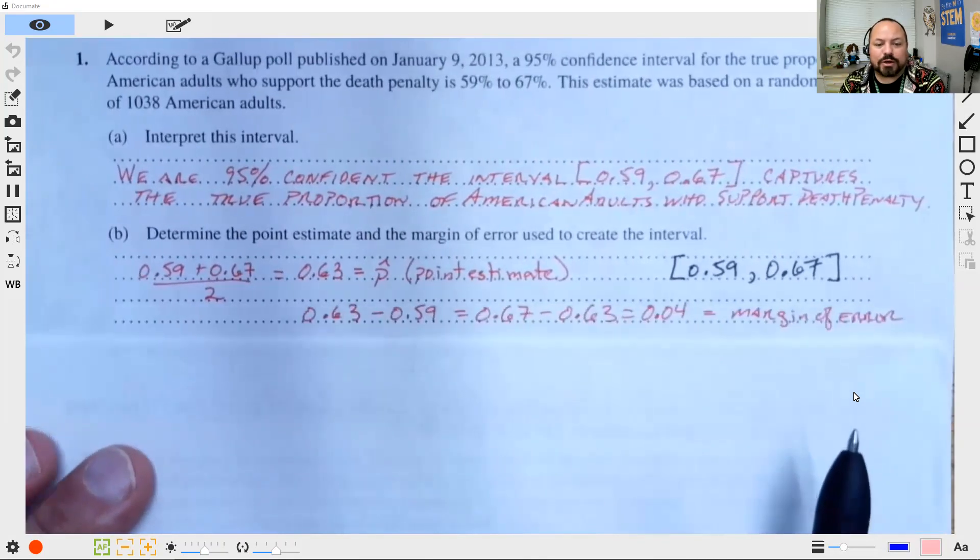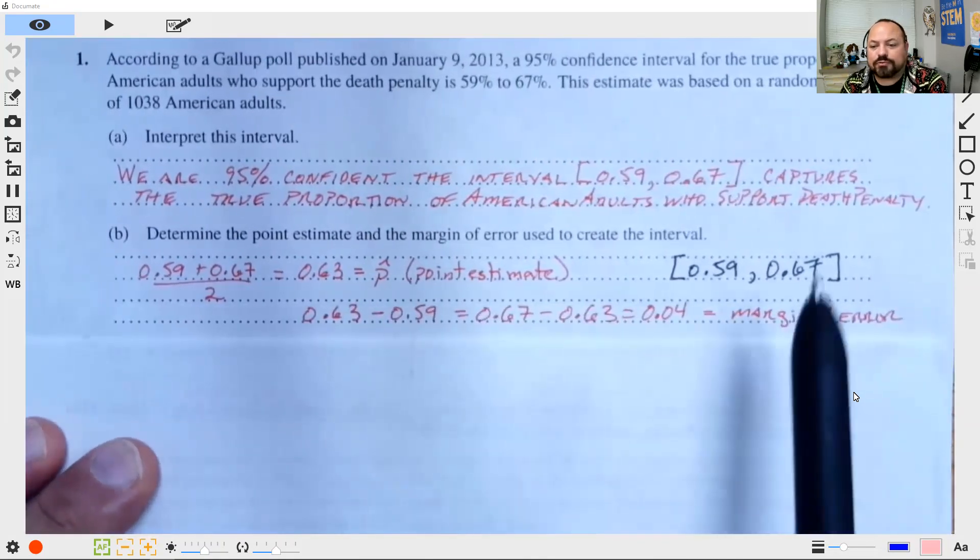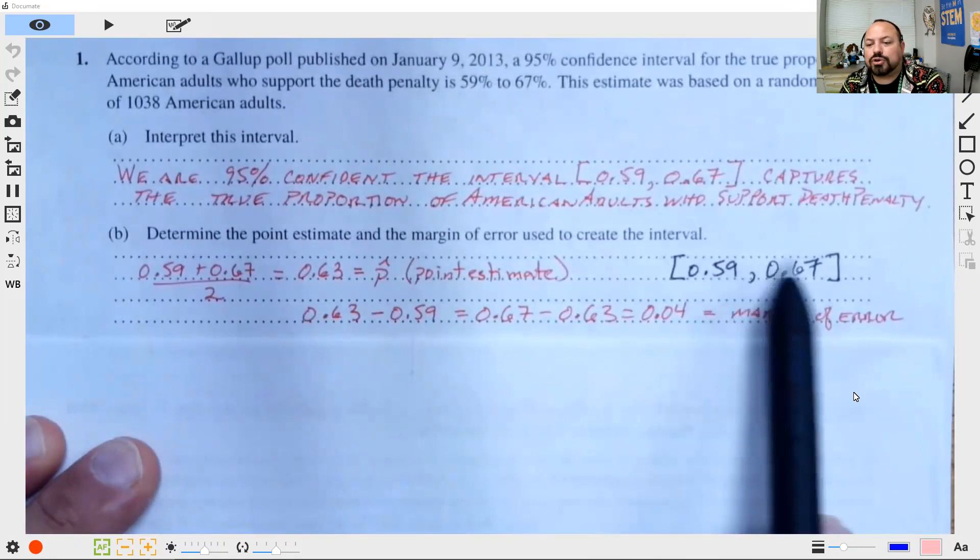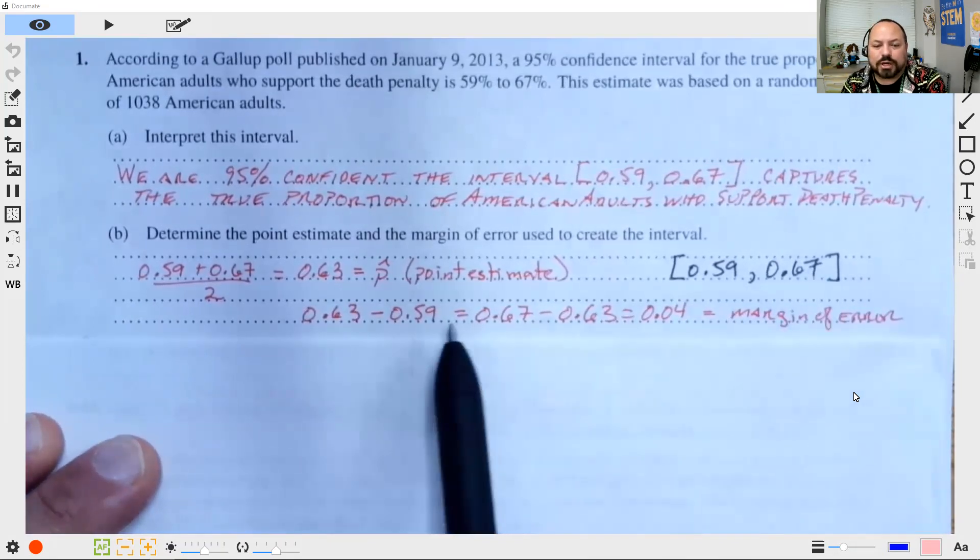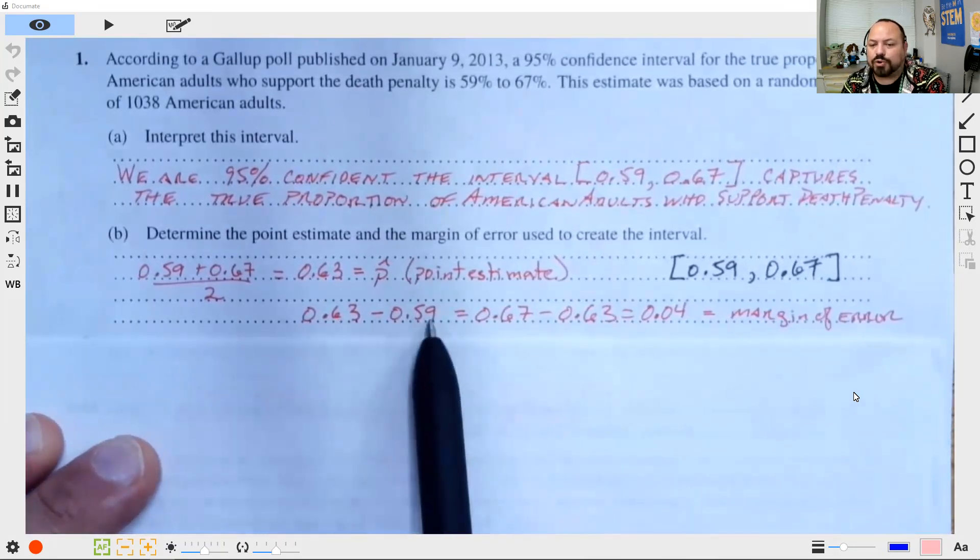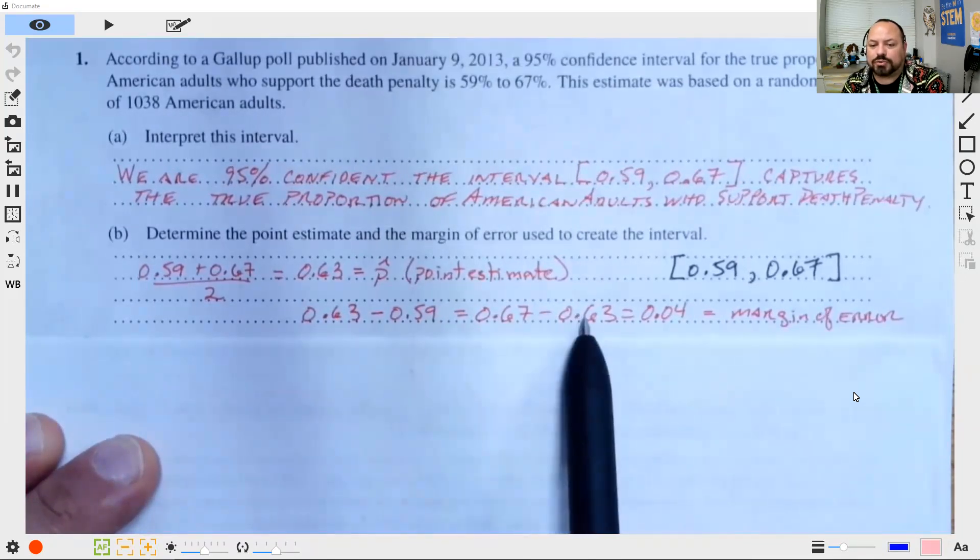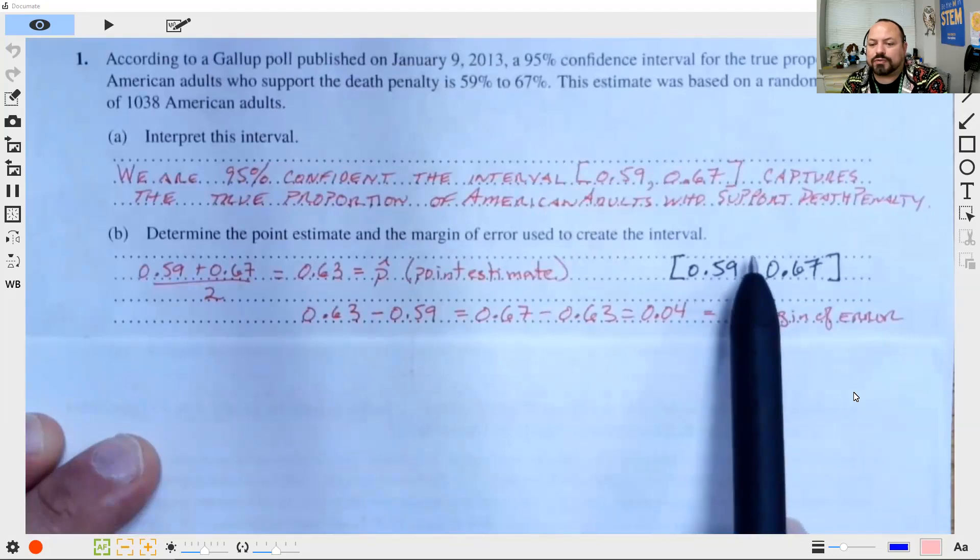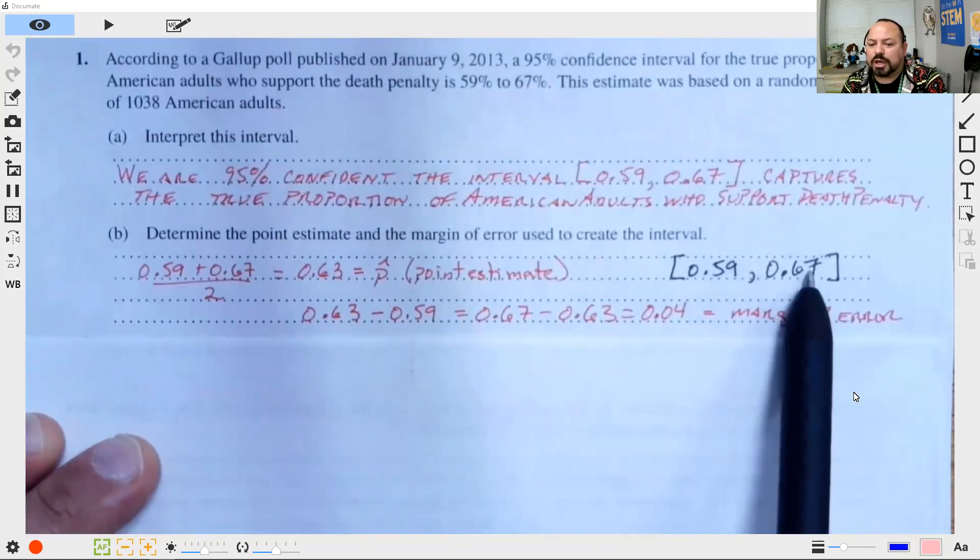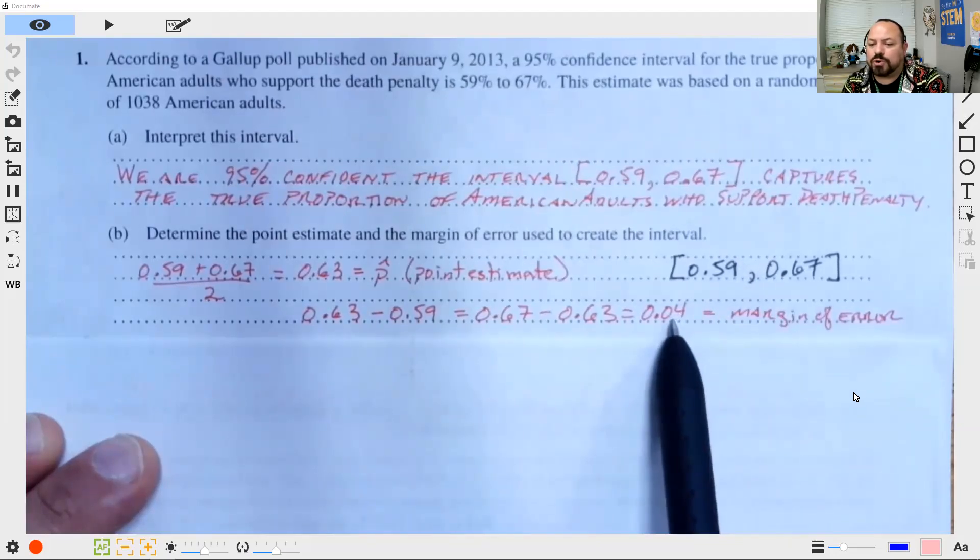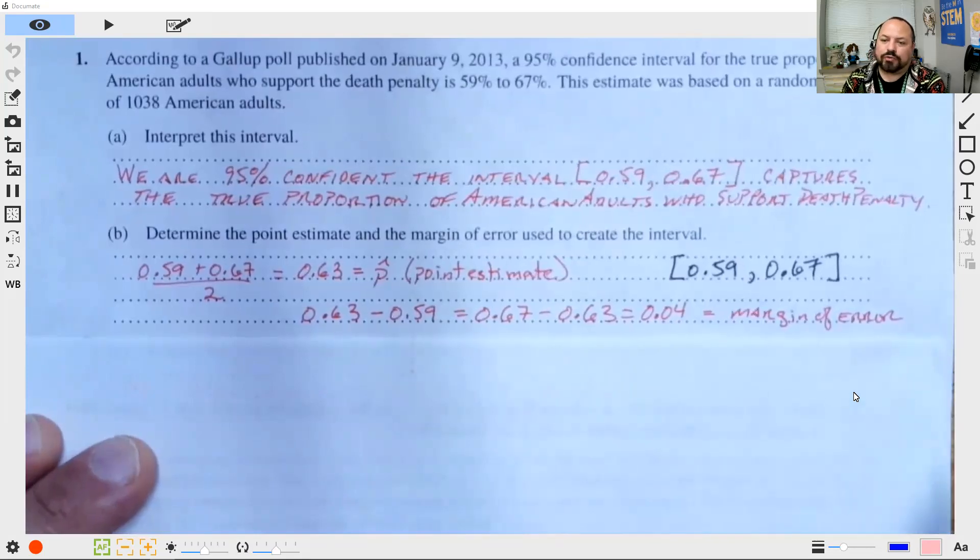Now, the margin of error is nothing more than the distance from the center to the end of my interval. So I could either say 0.63 minus 0.59 or 0.67 minus 0.63. Either way, the distance from the center to the end is 0.04, and that's going to be my margin of error.